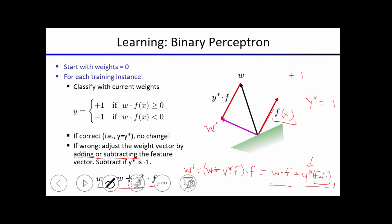So this is a vector because this is the current... So this is what w prime equals. And then when you take the dot product with f, that's the new classification that you make after you update it.